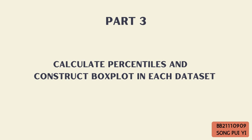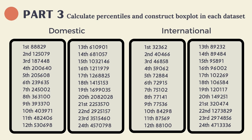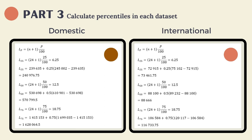Part 3: Calculate the percentiles and construct box plots for each dataset. This slide shows the domestic and international datasets in ascending order. Next, calculate the percentiles in each dataset. The formula to calculate percentiles is to locate the position Lp equals (n + 1) times p divided by 100. Using this formula, we can calculate the 25th, 50th, and 75th percentiles.